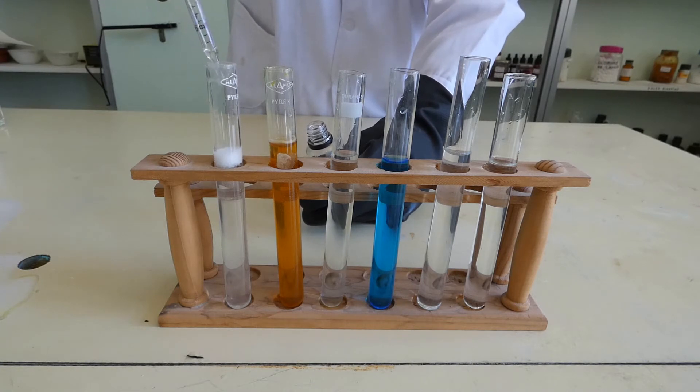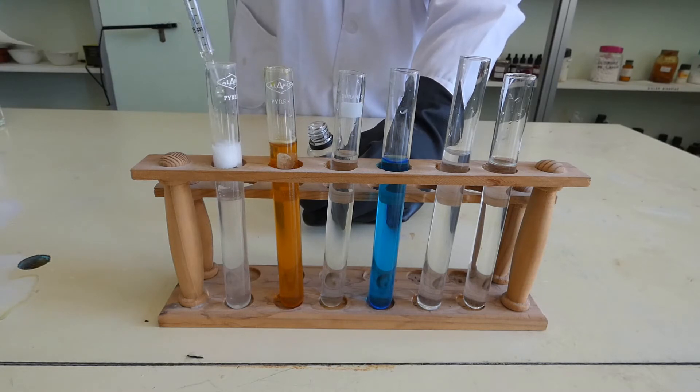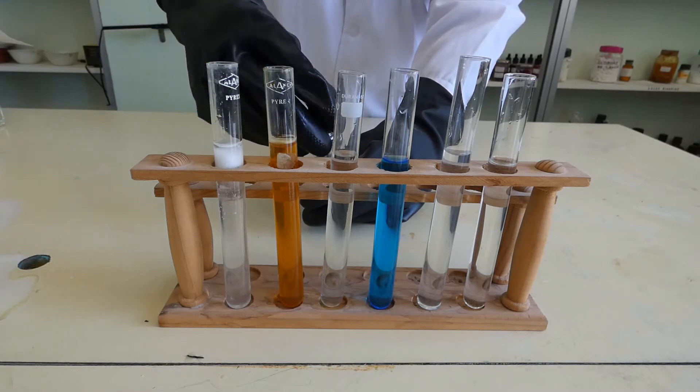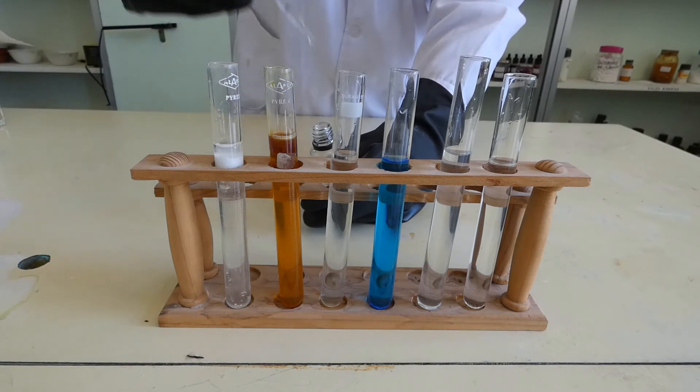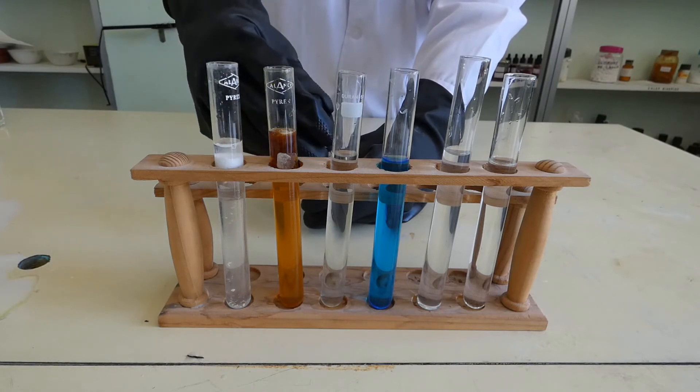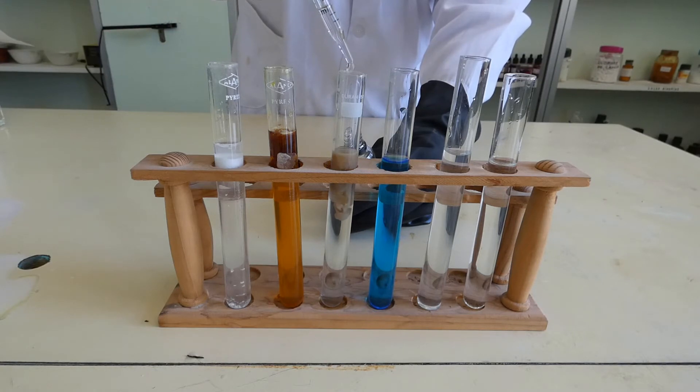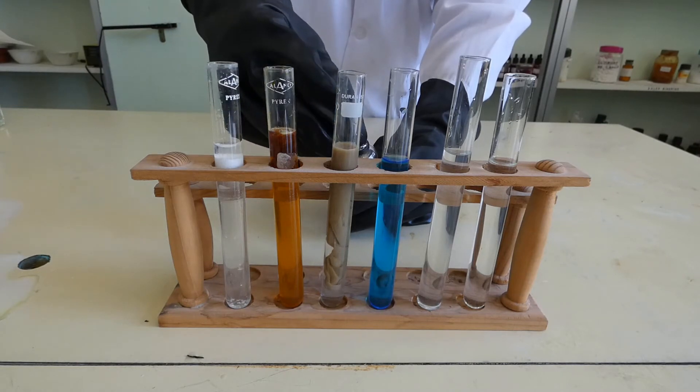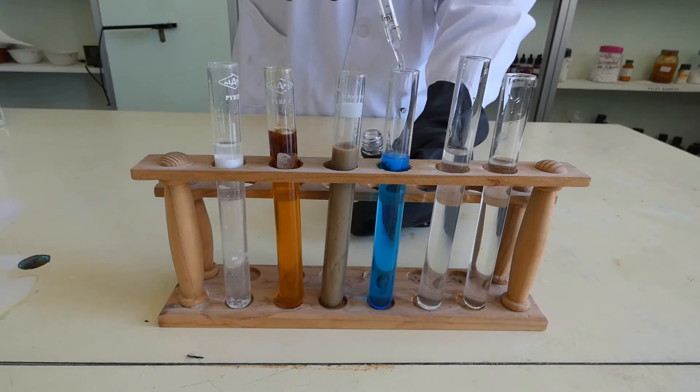Lead-2-hydroxide is formed in the first tube. In the second one, iron-3-hydroxide. In the third one, silver-hydroxide. In the fourth one, copper-2-hydroxide.